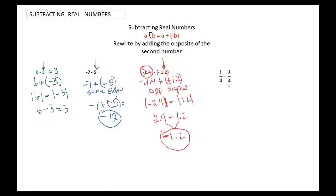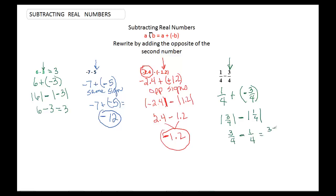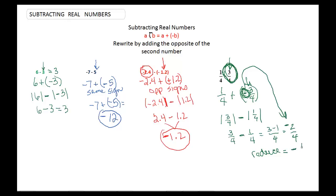And then finally, this last problem — we have 1.4 and then plus the opposite of 3.4, so it would be negative 3.4. In this case, forget about the sign for a second. 3.4 is bigger than 1.4, and when we take the absolute value they're both going to be positive, so we want the bigger number to come first. So the absolute value of 3.4 minus the absolute value of 1.4 is 3.4 minus 1.4. So 3 minus 1 over 4 is going to be 2 over 4. Going back, 3.4 is bigger and it's a negative, so that means this is a negative 2 fourths. And you've got to reduce — fractions always have to be in reduced form — so it's negative 1 half.